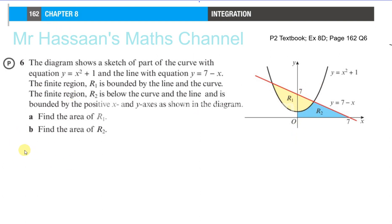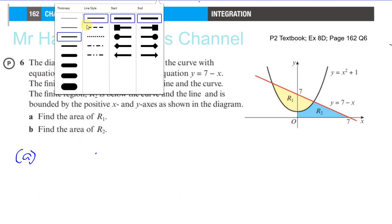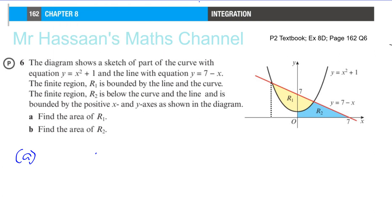R1 is more straightforward. The area of R1 is basically the area enclosed between the line and the curve. What I need to do first is find the coordinates of the points where the line and the curve intersect — specifically the x-coordinate of each intersection point. Let's call them x1 and x2.